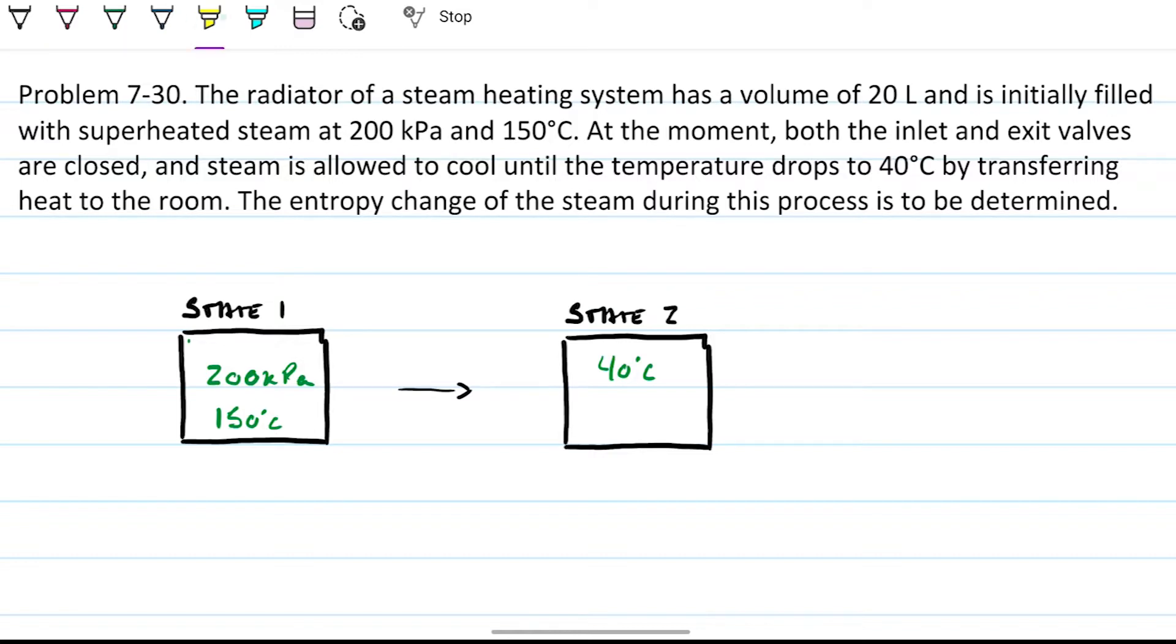The entropy change of the steam during this process is to be determined. So let's look at the problem statement and note that first we have 20 liters. Two things are relevant there: the unit is not meters cubed, so we might want to convert that, that's 20 times 10 to the minus 3. And also that they're giving us the volume - when they give us the volume and not the specific volume, you can infer that we're going to need to calculate the mass.